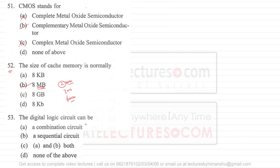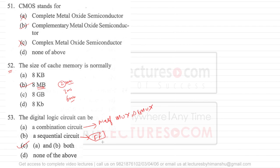Question number 53 says a digital logic circuit can be — it can be a combinational circuit or it can also be a sequential circuit. Option C is the correct answer. Combinational circuits include half adders, full adders, multiplexers, and demultiplexers. Sequential circuits, like those built using flip-flops, need to store some kind of information.